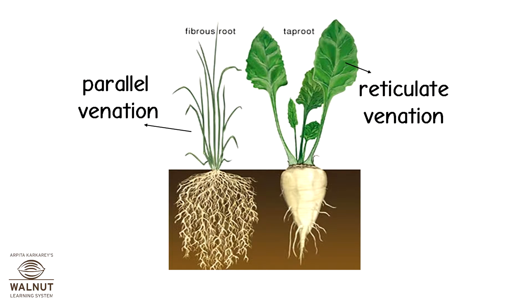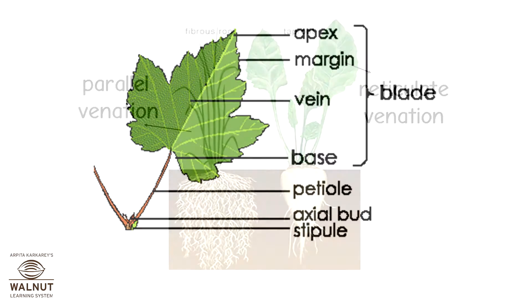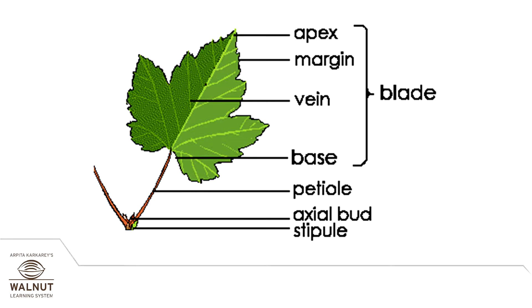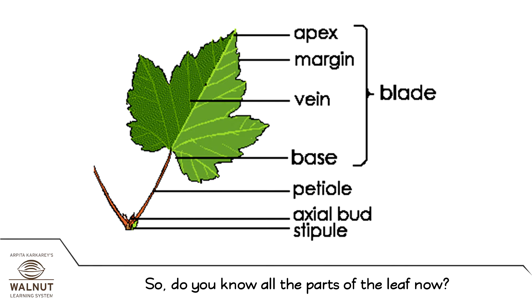Remember this: parallel venation and reticulate venation. Do you know all the parts of the leaf now? Apex, margin, vein, base, petiole, axial bud, stipule.